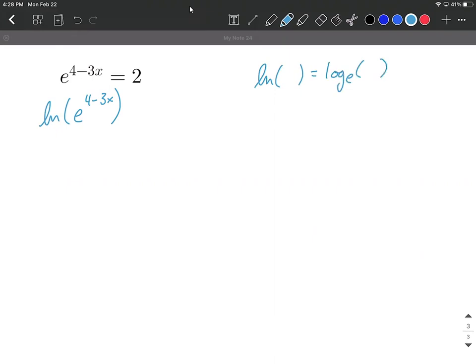So what you're going to see is natural logs, when you plug an e to a power into them, because natural logarithms and e to powers are inverses of one another, we're going to get this really nice canceling out, and we're going to be left with the exponent.